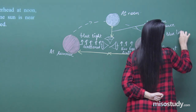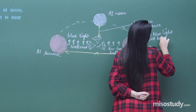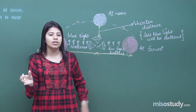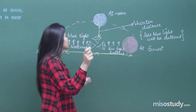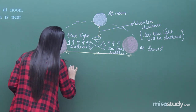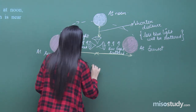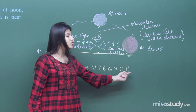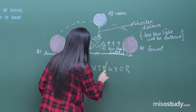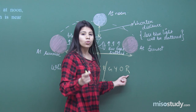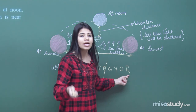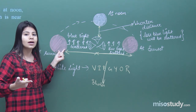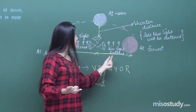At the noon position the distance is comparatively shorter, so less blue light is scattered. If less blue light is scattered, the composition of the remaining light still contains all seven colours of white sunlight — VIBGYOR. Since the blue light is not significantly scattered, you receive the complete composition and perceive white light. That is why at noon the sun appears white.